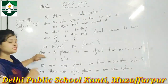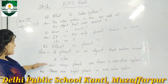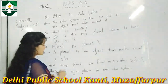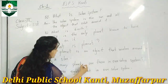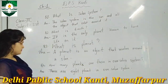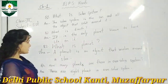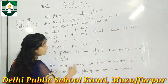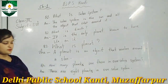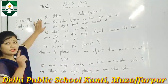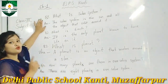We have an extra question: how many planets are there in our solar system? There are 8 planets in our solar system. This is what we will tell you about in these questions.